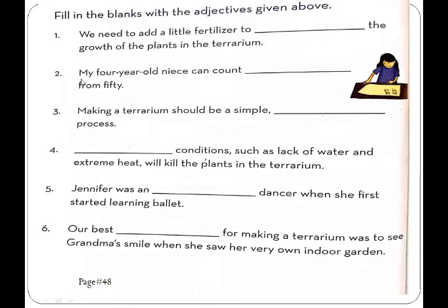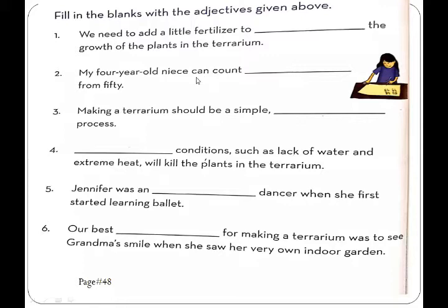Blank number 2: 'My 4-year-old niece can count ___ from 50.' The answer is 'backward.' Here you are explaining that your niece can count backward from 50, so the suffix 'backward' is added.